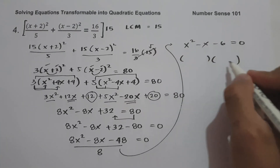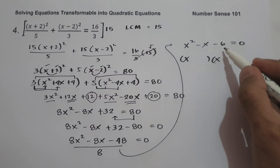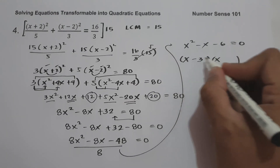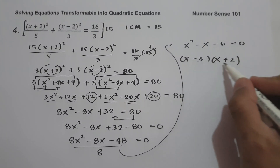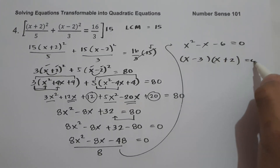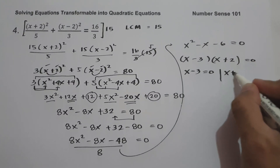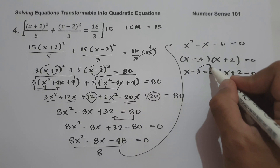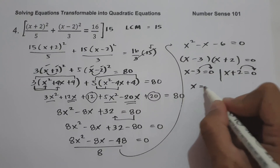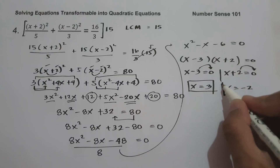Factoring: the factors of x squared are x and x. We need two numbers that multiply to negative 6 and add to negative 1: that is negative 3 and positive 2. Negative 3 times 2 is negative 6, and negative 3 plus 2 is negative 1. Equating to zero: x minus 3 equals 0 and x plus 2 equals 0, giving x equals 3 and x equals negative 2. This will be our answer.